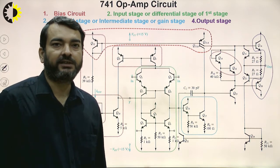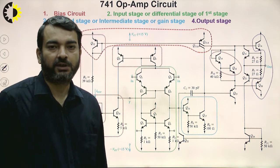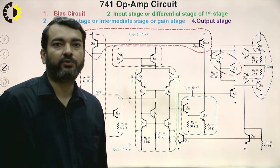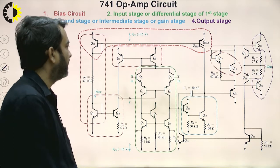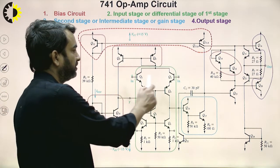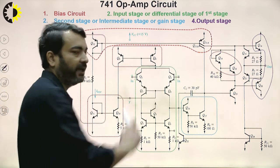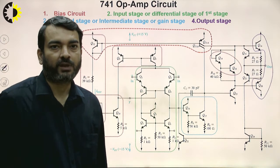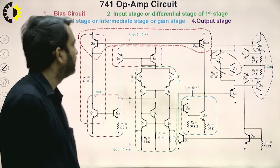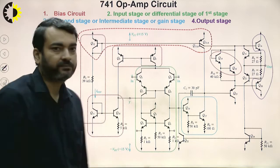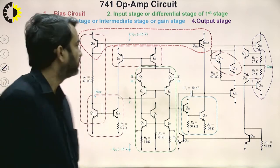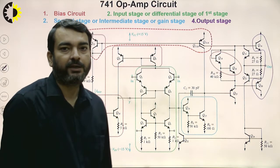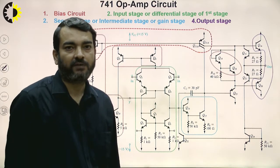Then there is an input stage for providing the external input signal. We can see this emitter follower pair Q1 and Q2, which is used for providing the input. This input stage is shown in green color, and this complete section shows the input stage of the 741.